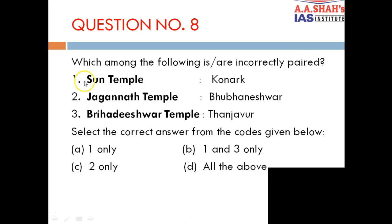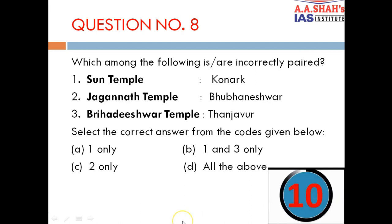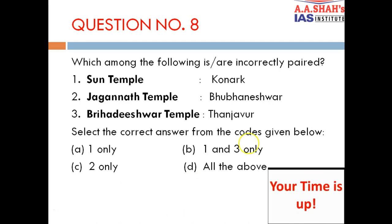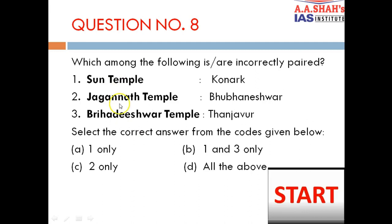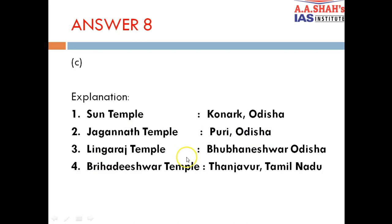Question 8: Which among the following are incorrectly paired? 1. Sun temple, Konark. 2. Jagannath temple, Bhubaneshwar. 3. Brihadishwara temple, Thanjavur. The correct answer is C — one and three only, meaning statement 2 is incorrectly paired. Jagannath temple is in Puri, Odisha — not Bhubaneshwar. Lingaraj temple is in Bhubaneshwar. So the three Odisha temples are: Sun temple at Konark, Jagannath temple at Puri, and Lingaraj temple at Bhubaneshwar. Brihadishwara temple in Thanjavur, Tamil Nadu, is correctly paired.